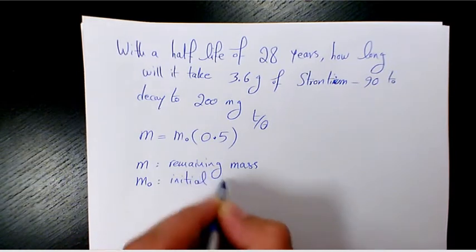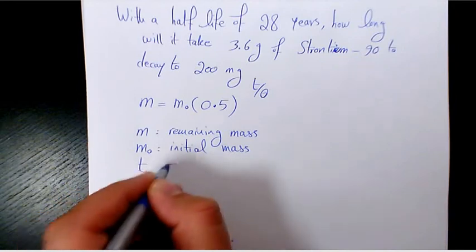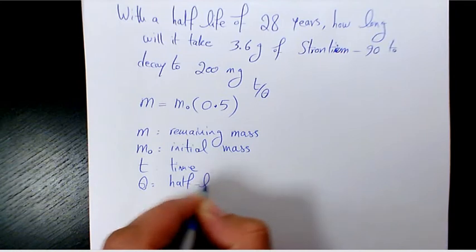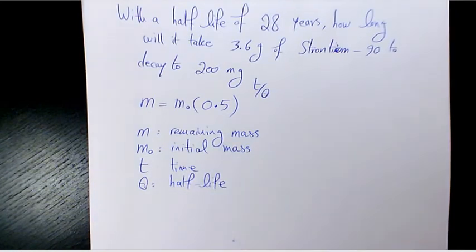T is the time and θ is the half-life time. So the thing is, M and M₀ has to have the same unit, and T and θ must have the same unit as well.